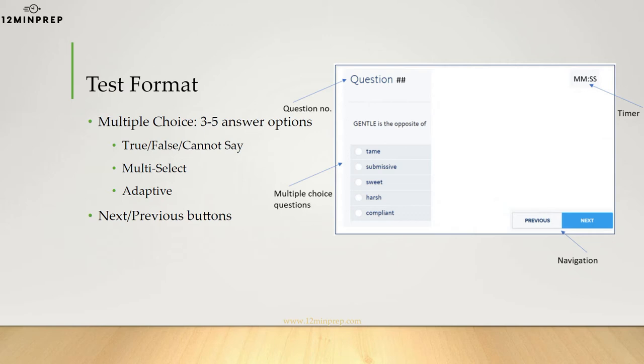Each correct answer is worth one point, so answering every question correctly yields a perfect score of 50. On the WPT-Q, the short version, each question is worth 1.66 points, so a perfect score is still 50. You do not lose points for skipping questions or answering them incorrectly.